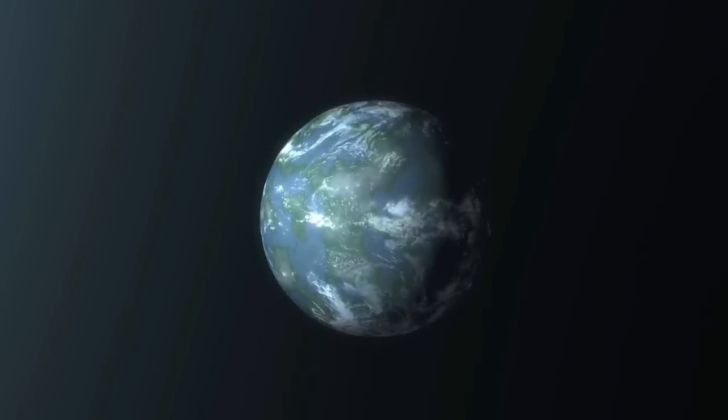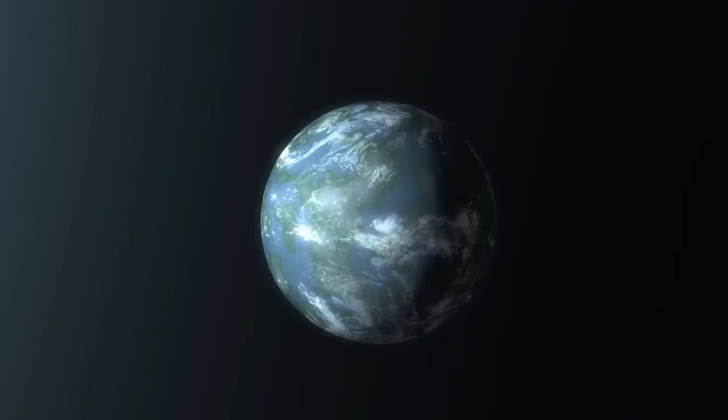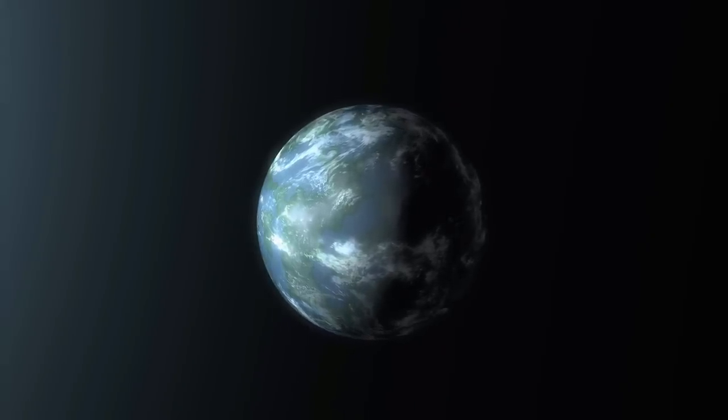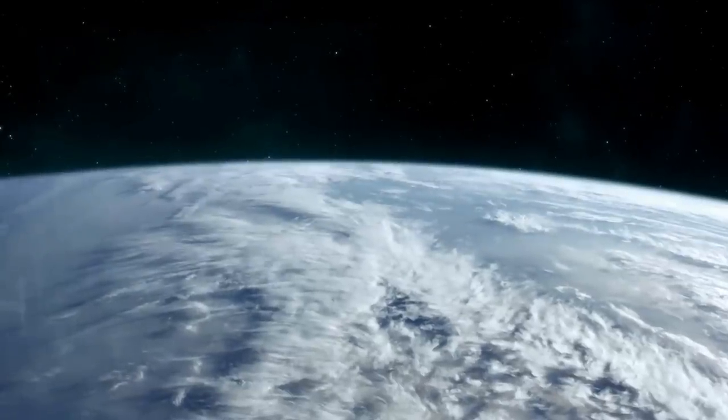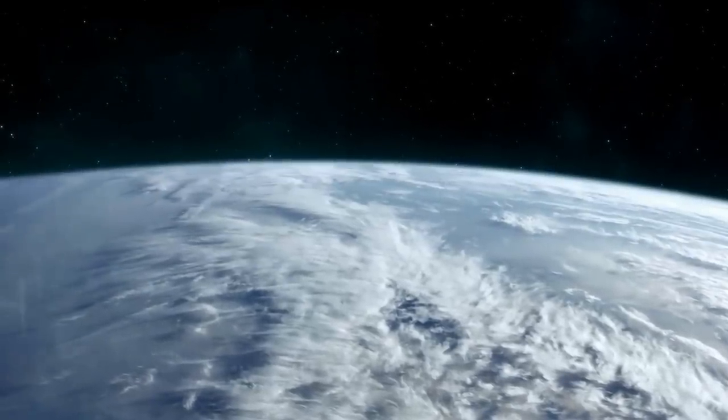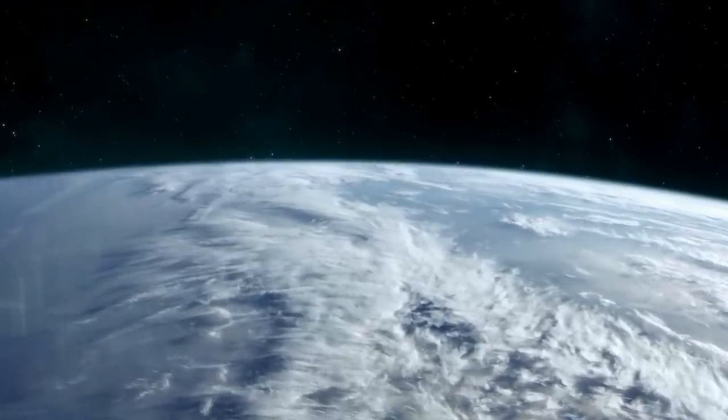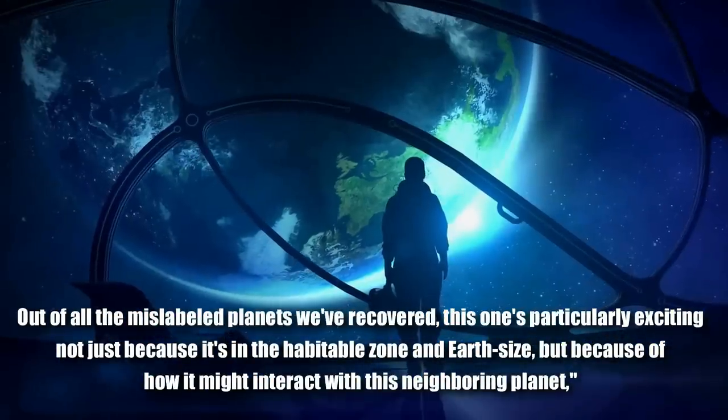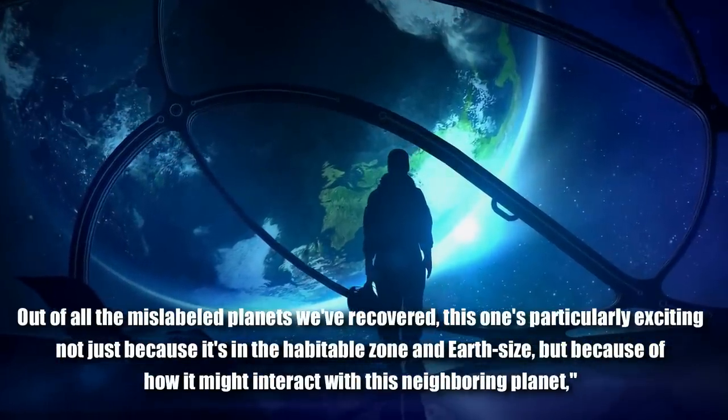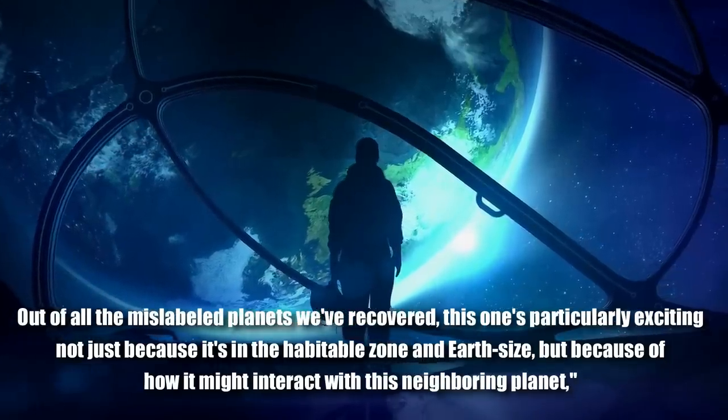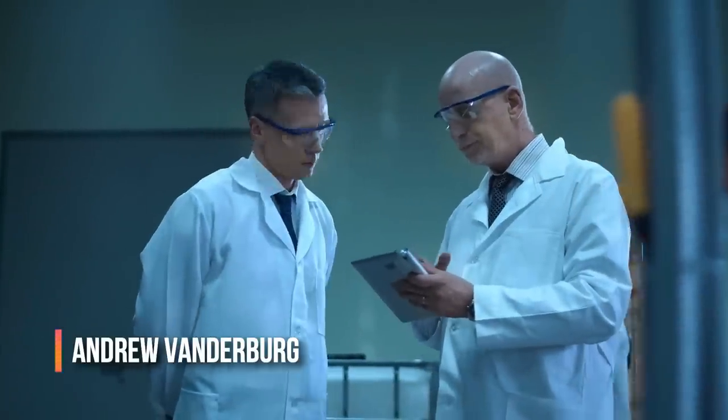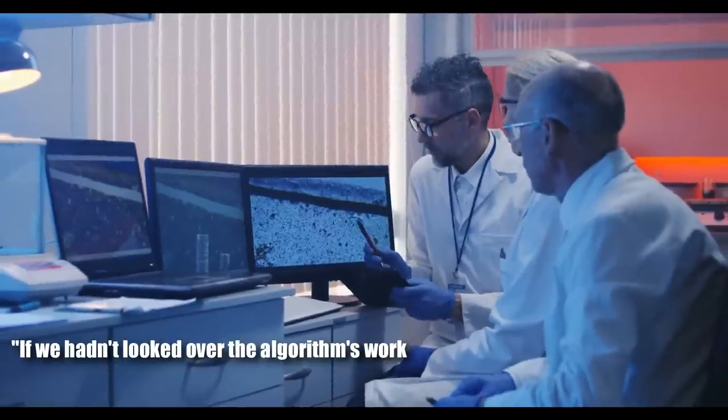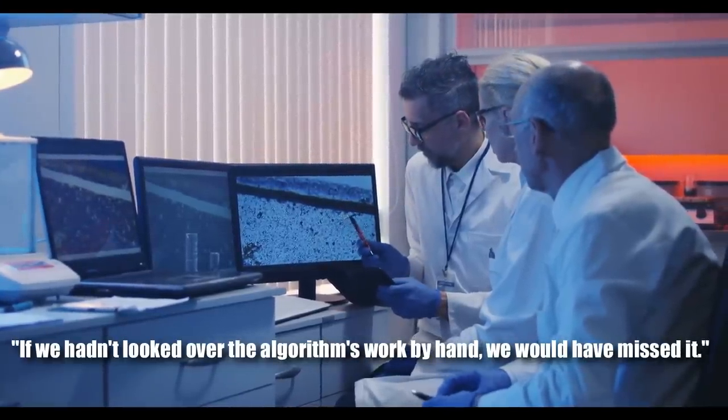So by that logic, if this planet, which is allegedly one of the closest in similarities to Earth that we've seen so far was a false positive, it could mean that scores of other planets out there are also being labeled that, and thus need to be found once again, so that we can prove that they're more than just blips on the screen. Out of all the mislabeled planets we've recovered, this one's particularly exciting, not just because it's in the habitable zone and Earth size, but because of how it might interact with this neighboring planet, said Andrew Vanderburg, a researcher at the University of Texas at Austin and first author of the study. If we hadn't looked over at the algorithms worked by hand, we would have missed it.